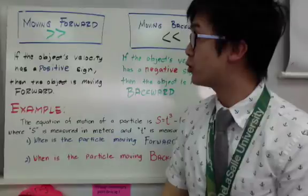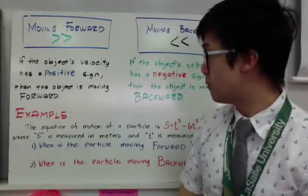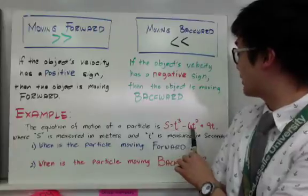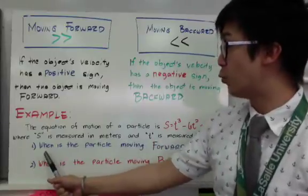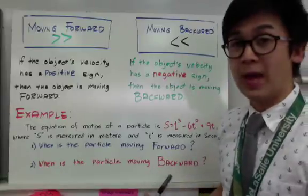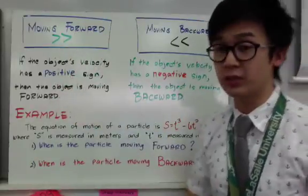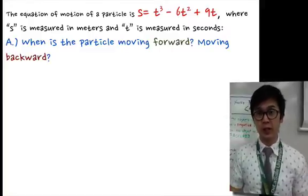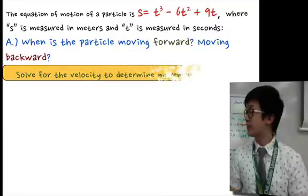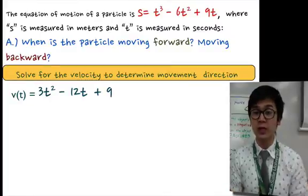Let's look at another example. The equation of motion of a particle is s = t³ - 6t² + 9t, where s is measured in meters and t in seconds. We are asked to find when the particle is moving forward and when it is moving backwards. Since we are given a position function, we need to find the velocity by taking the first derivative, which gives us v = 3t² - 12t + 9.